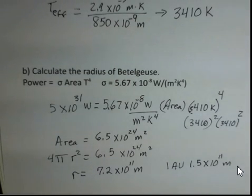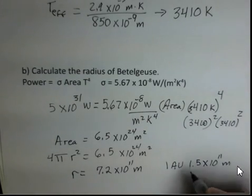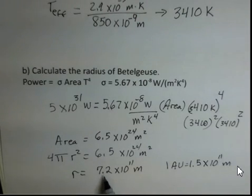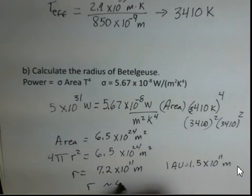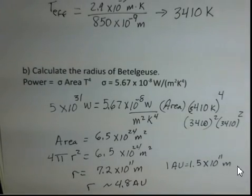If we would use this as a conversion factor, 1 AU is this number of meters. If I would divide then 7.2 times 10 to the 11th by 1.5 times 10 to the 11th, the 10 to the 11th's cancel. And I would find that the radius for this star is about 4.8 AUs, larger than the orbit of Mars.